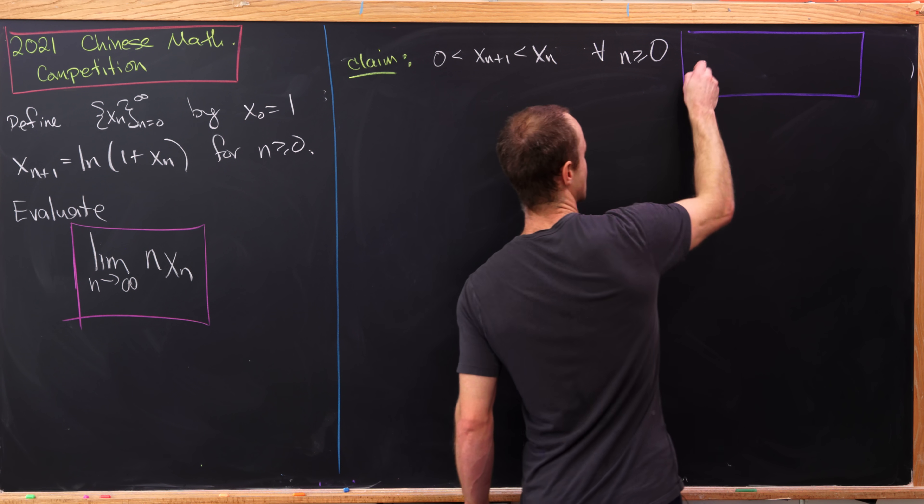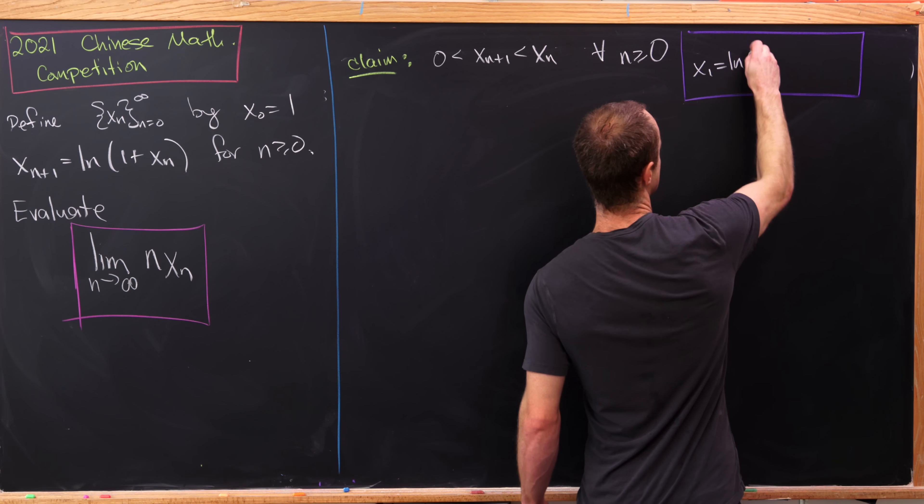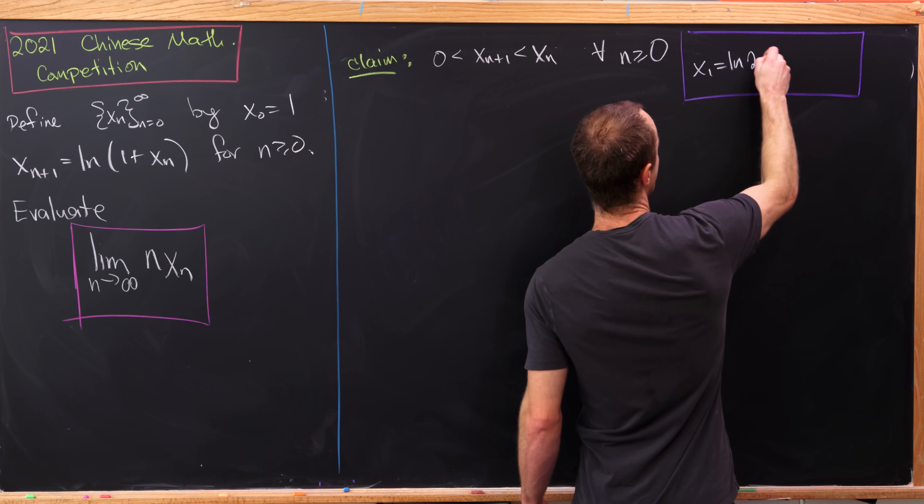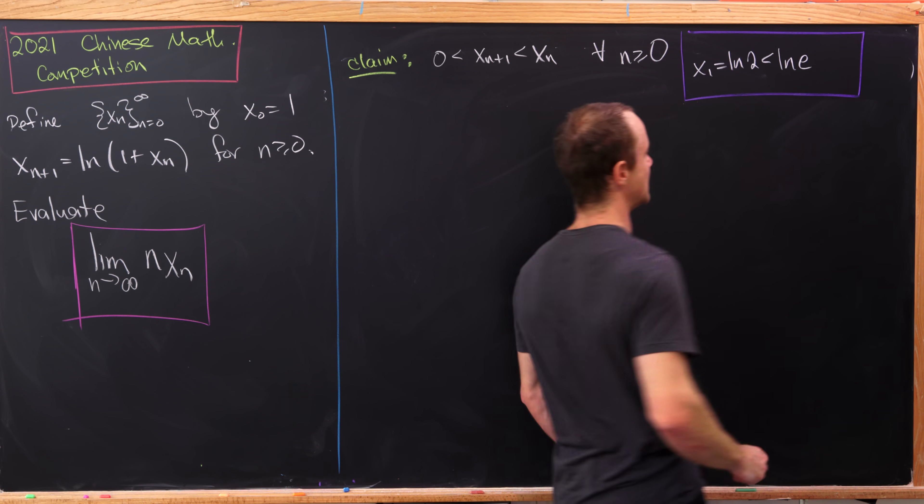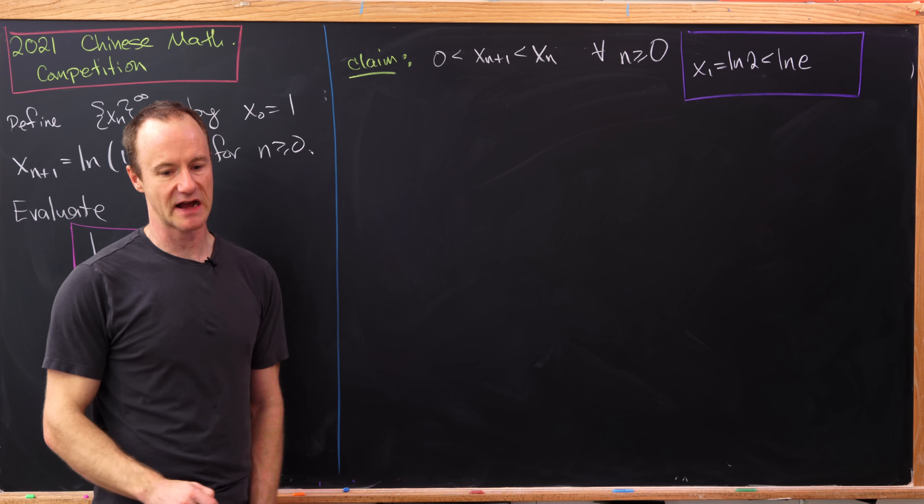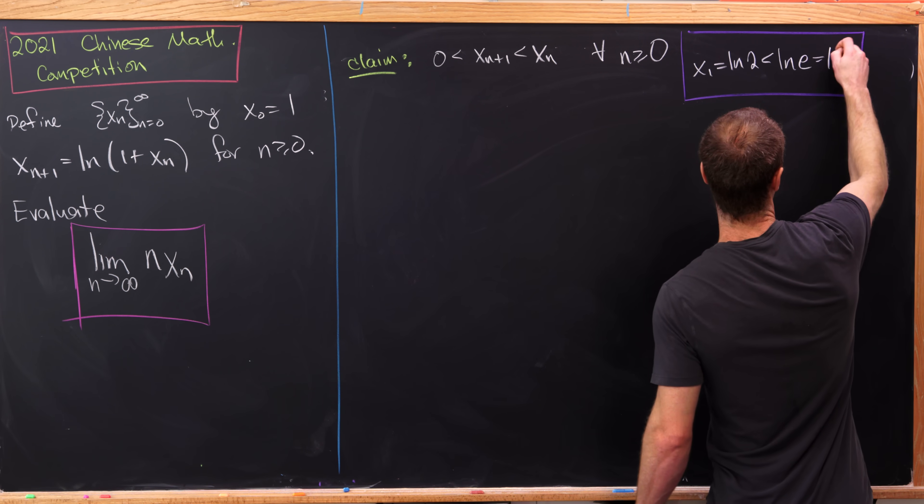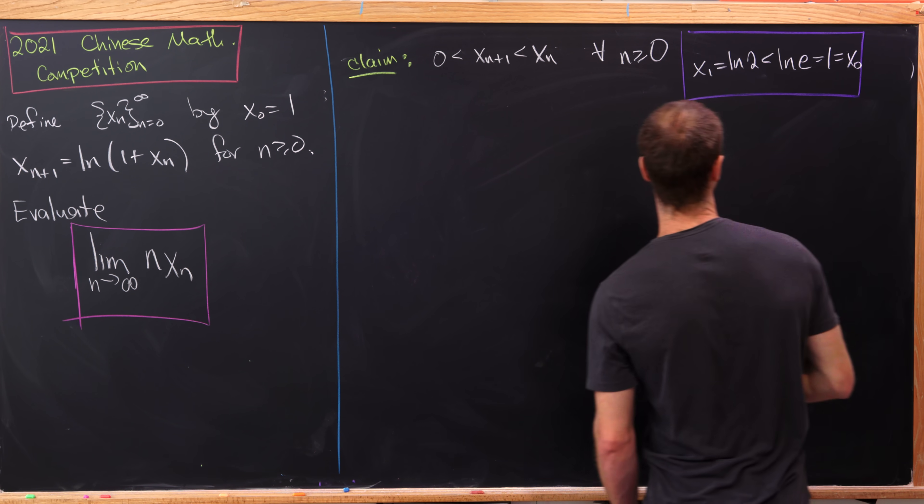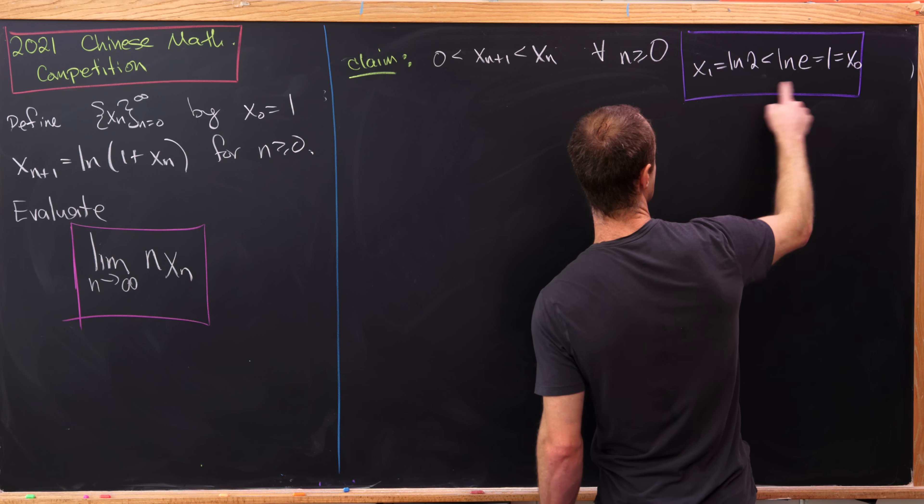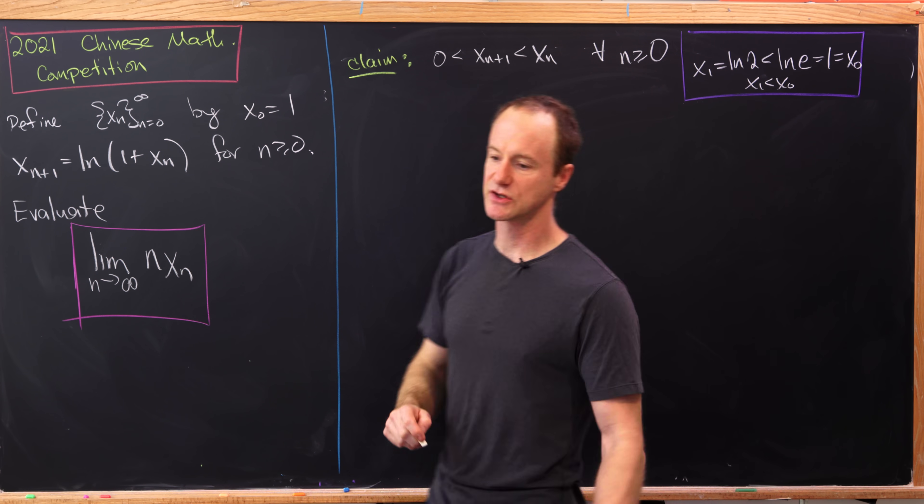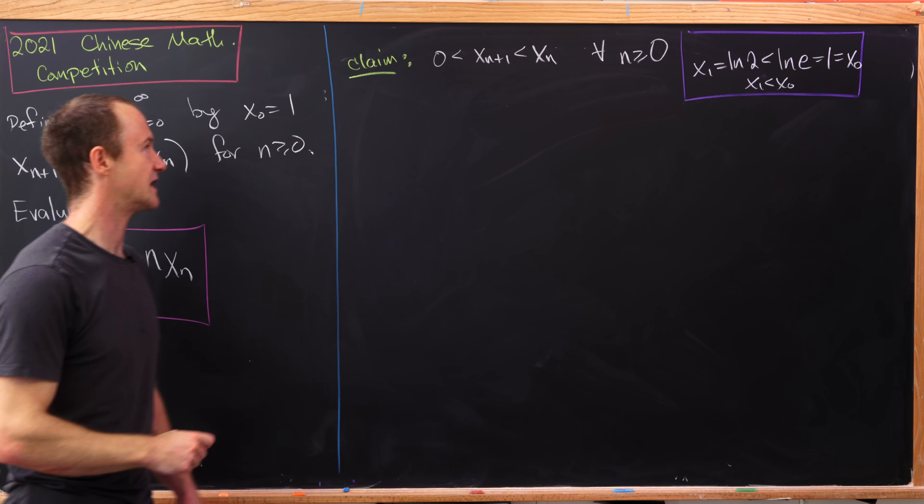Let's observe that x sub 1 is the natural log of 2, just by using our recursion, which is less than the natural log of e. Because e is bigger than 2 and the natural log is an increasing function, the natural log of e is 1, which is equal to x sub 0. So we have x1 is less than x0, so it's at least decreasing at the very beginning.